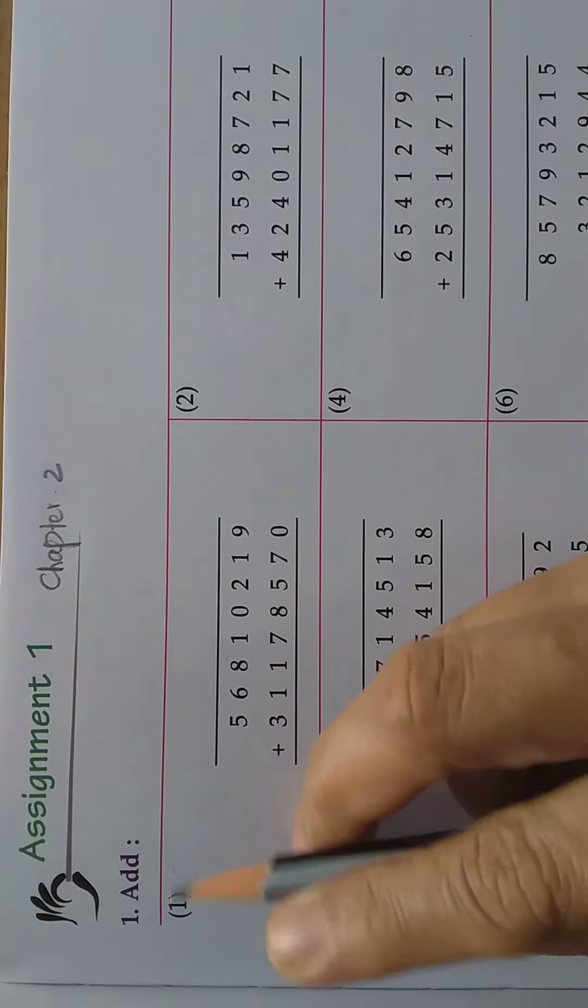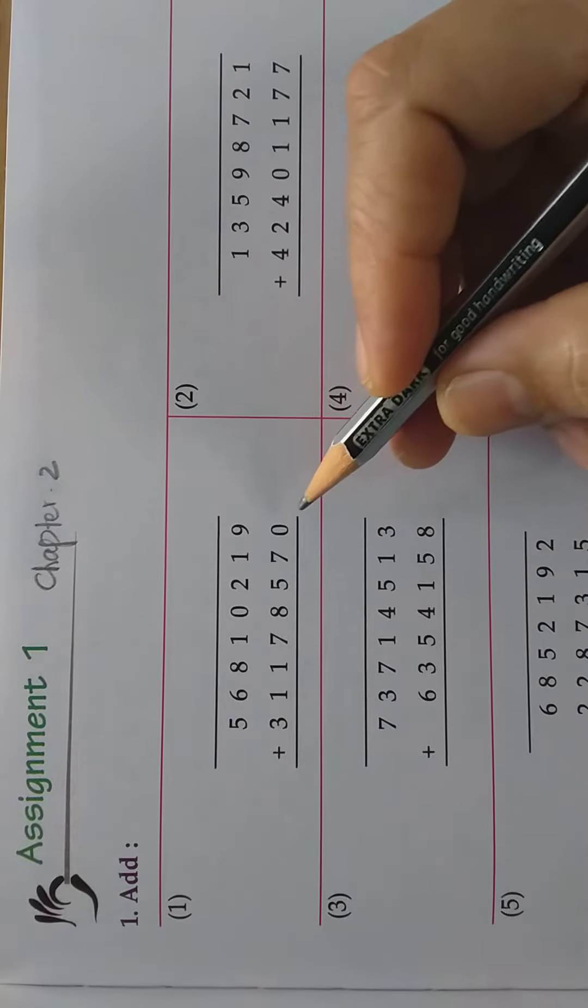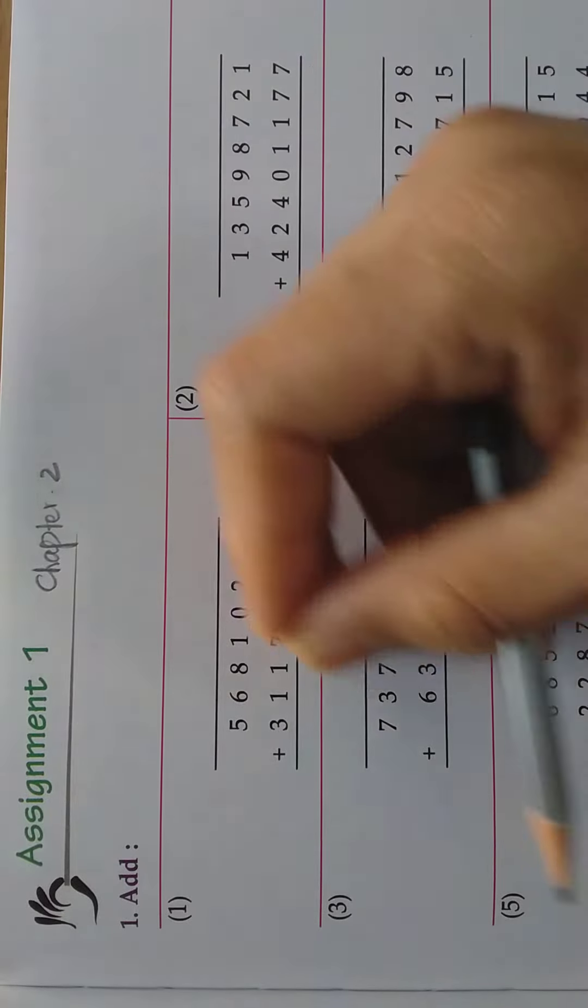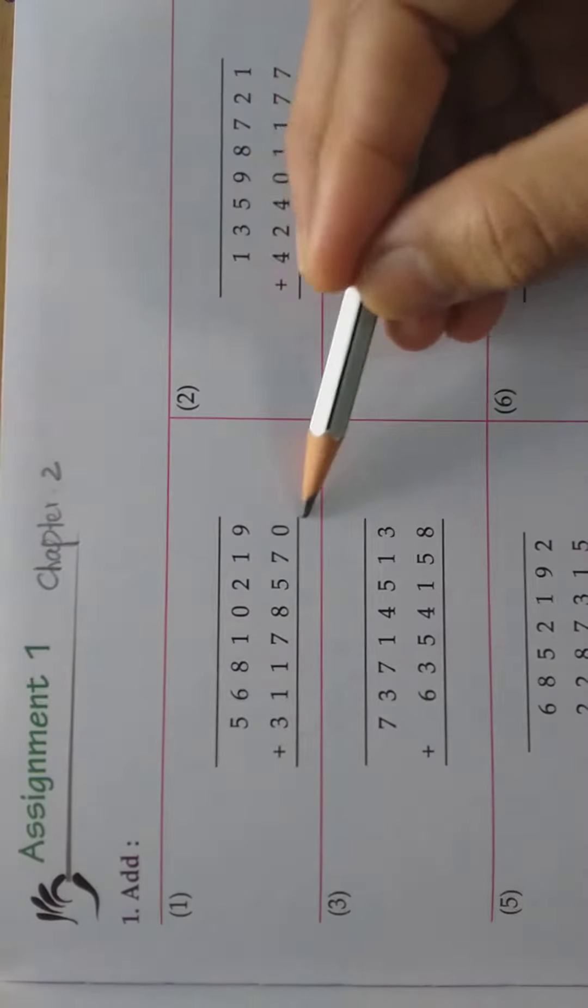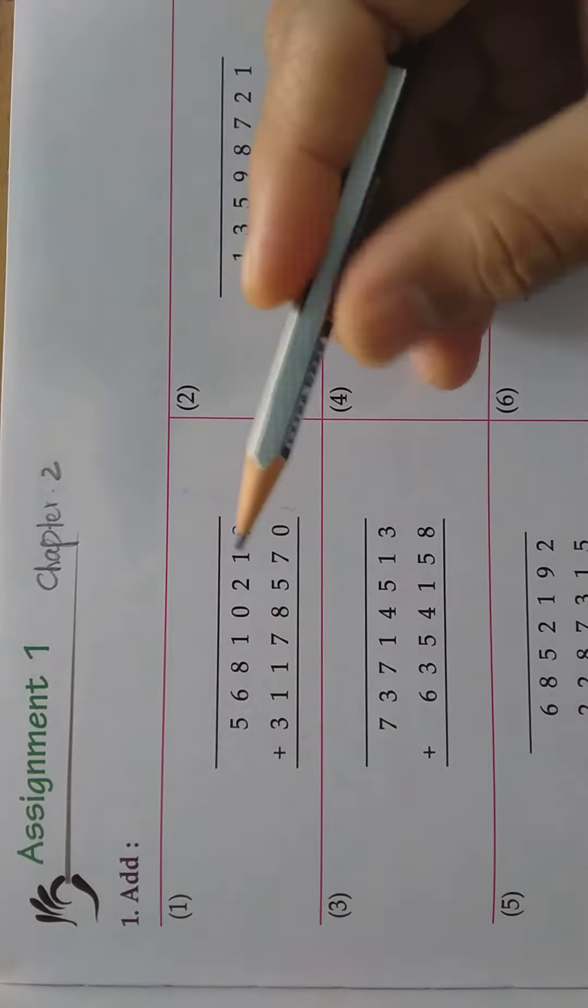The first sum, add. That means you should do addition. Now we will take the first sum. See here, the numbers are given here, two numbers are given. We will add it now. How to add now?